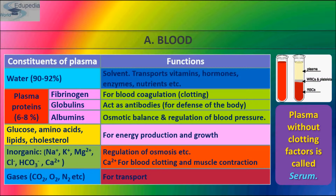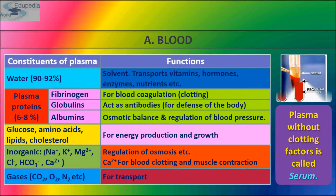Plasma also contains glucose, amino acids, lipids, and cholesterol, which are used for energy and growth. Inorganic substances such as Ca2+ (calcium ions) regulate osmosis and are used for blood clotting and muscle contraction. Gases such as O2, CO2, and N2 are also present and used for transport. Always note that plasma without clotting factors is called serum — that is, plasma minus all clotting factors.